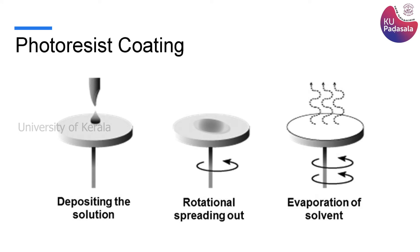How do you coat photoresist uniformly on the wafer? The process microfabrication people use is called spin coating, where you keep the wafer on the top of a rotating chuck or platform, pour the liquid photoresist on top, and then make the chuck rotate. You rotate at a specific speed for a particular amount of time, which yields a certain thickness of photoresist. Three parameters decide the thickness: the speed at which you rotate, the time for which you rotate, and the viscosity of the photoresist.